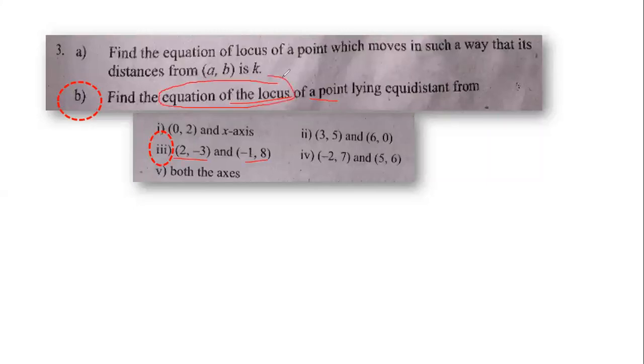Find the equation of the locus of a point lying equidistant from (2, -3) and (-1, -1). First of all, find the equation of the locus. You can find the equation of the locus.